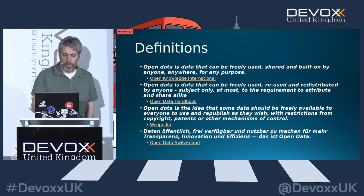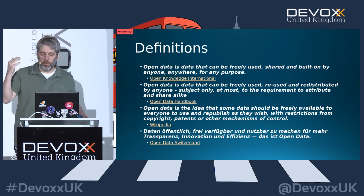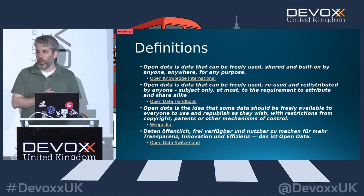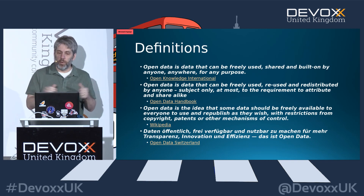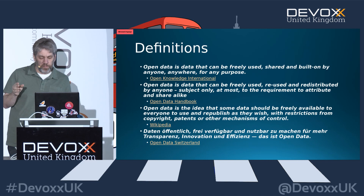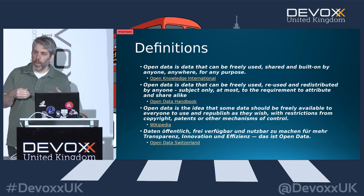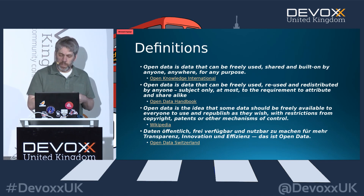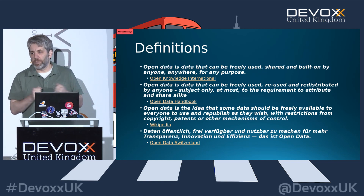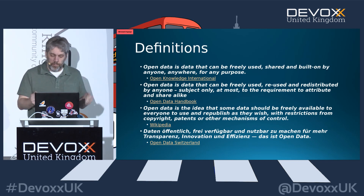So the first question is: what is open data? Here are some definitions that I found. Open data is data that can be freely used, shared, built on by anyone, anywhere, for any purpose. It's data that can be reused and redistributed by anyone, subject only at most to the requirements to attribute and share alike. There's a Swiss open data movement — it's free for use, and it's there for more transparency, innovation, and efficiency.